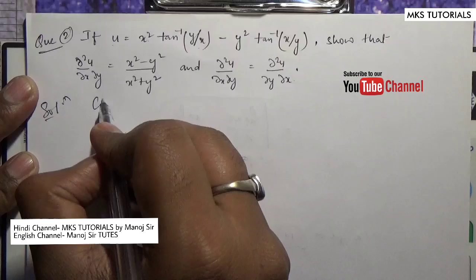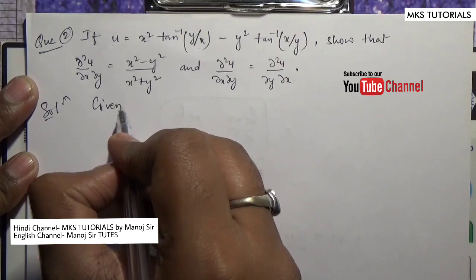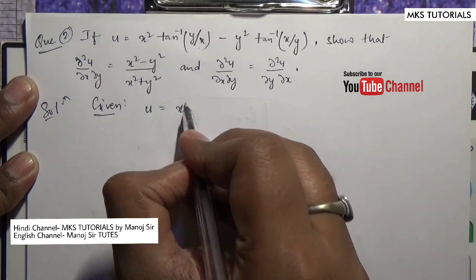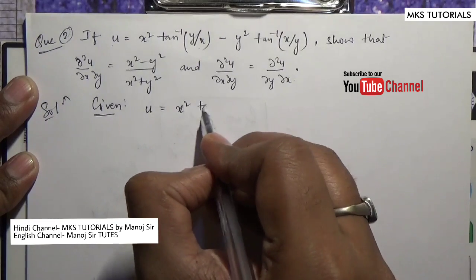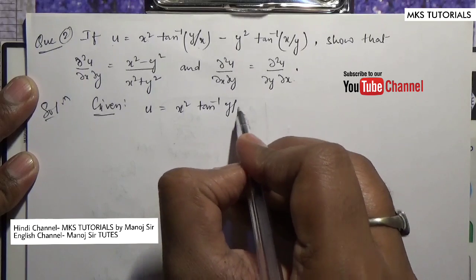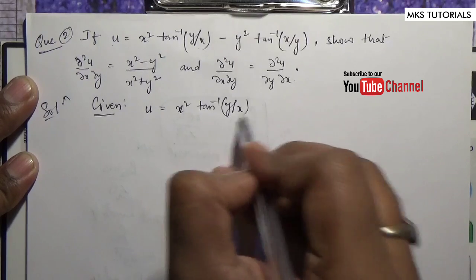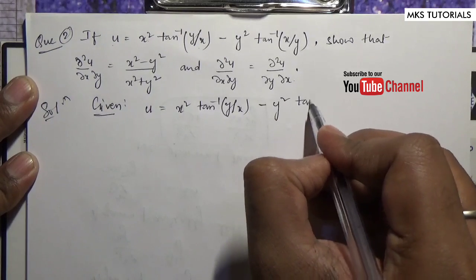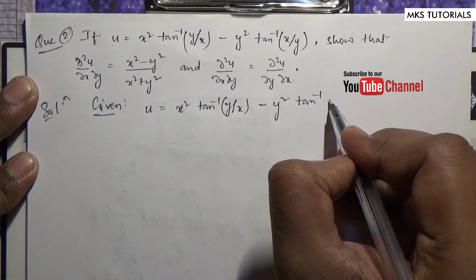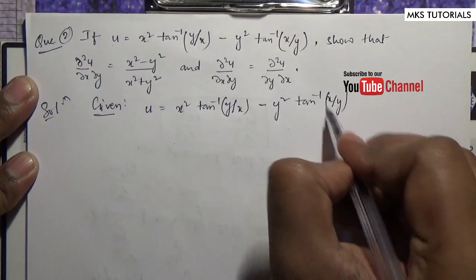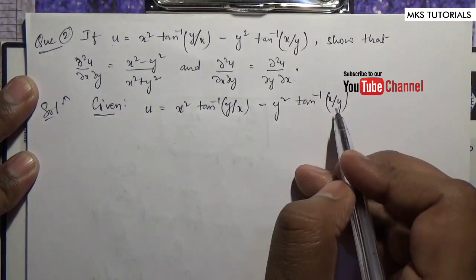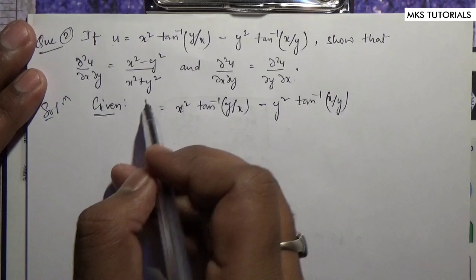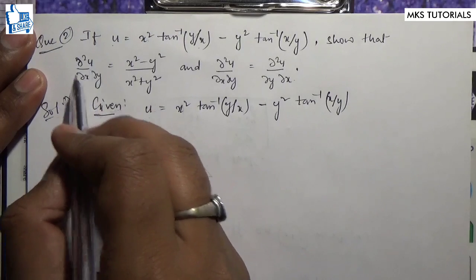What is given: u equals x² tan⁻¹(y/x) minus y² tan⁻¹(x/y), which I have given in the question in this video. So here I am going to show you.